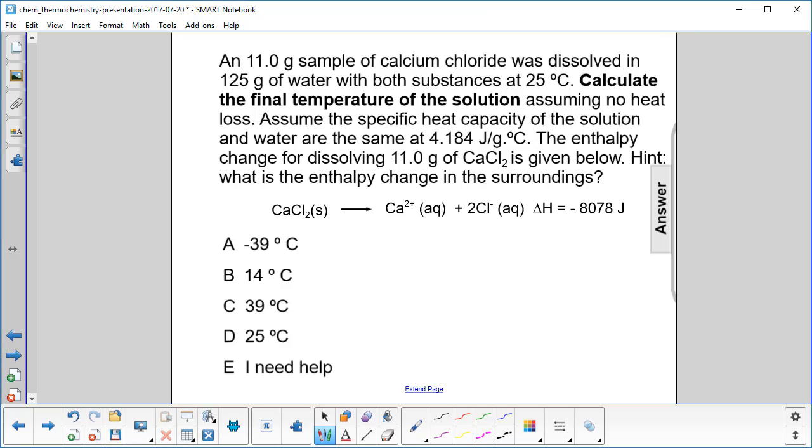We have an 11-gram sample of calcium chloride dissolving in 125 grams of water, so our total mass is going to be 136. You have to add both of them - conservation of matter.